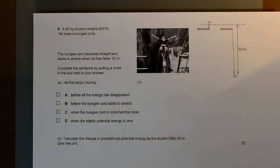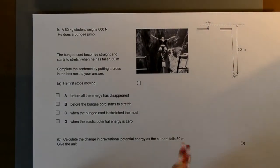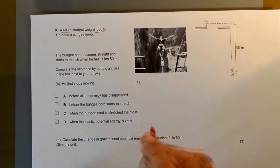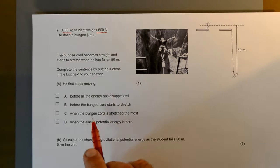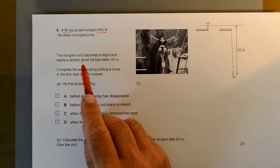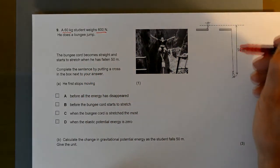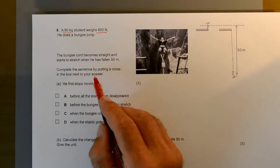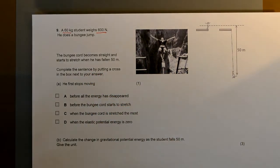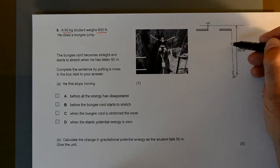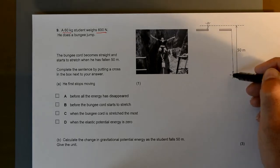Question 9: A 60 kilogram student weighs 600 newtons. He does a bungee jump. The bungee cord becomes straight and starts to stretch when he has fallen 50 meters. Complete the sentence by putting a cross in the box next to your answer. He first stops moving. So he starts here, goes faster and faster until he gets to 50 meters, then the bungee starts to slow him down.